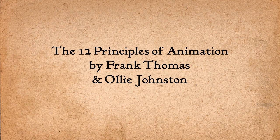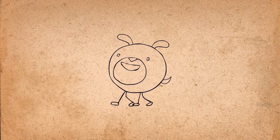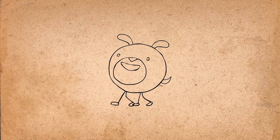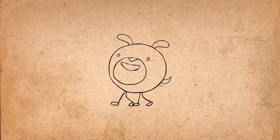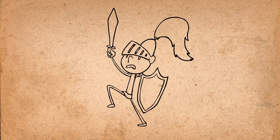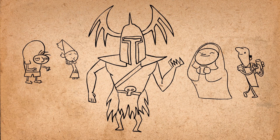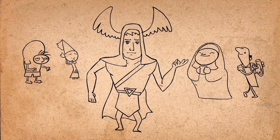The last principle of animation is called appeal. Basically, characters that you animate should be somewhat pleasing to look at. They should have some kind of charismatic aspect to like about them. This doesn't only apply to the hero of the story, but also the villain and every other character. Appeal doesn't always mean good looking, it can also mean interesting.